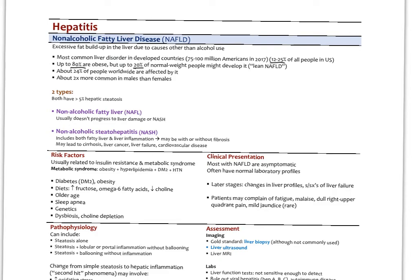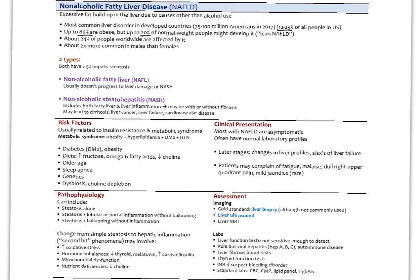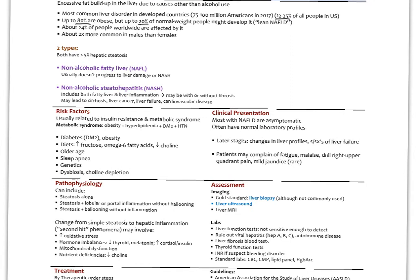There's two types. Both have more than 5% liver steatosis. There's the non-alcoholic fatty liver. That is a stage which usually doesn't progress to any further liver damage. Or NASH, not all those 25% will progress on to the next stage, which is NASH, non-alcoholic steatohepatitis. That includes both fatty liver and liver inflammation. That can eventually result in fibrosis. That might lead to our classic cirrhosis, liver cancer, liver failure, as well as an uptick of cardiovascular disease. We're worried about the steatosis progressing into NASH. That's the more serious form here.